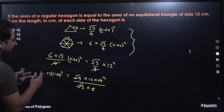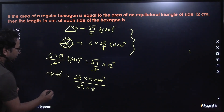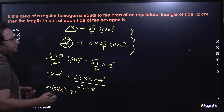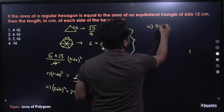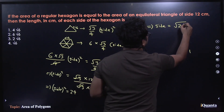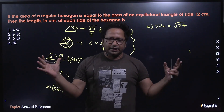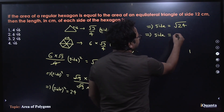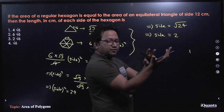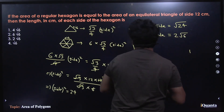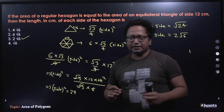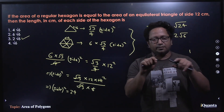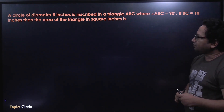Since s² = 24, the side equals √24. Taking the positive square root — since a side of any polygon can never be negative — we factor out 4: √24 = √(4×6) = 2√6. So the answer is 2√6 centimeters. A very easy question; if you don't know the hexagon formula, you can derive it since a regular hexagon is a combination of six equilateral triangles. Moving on to the next question on circles.